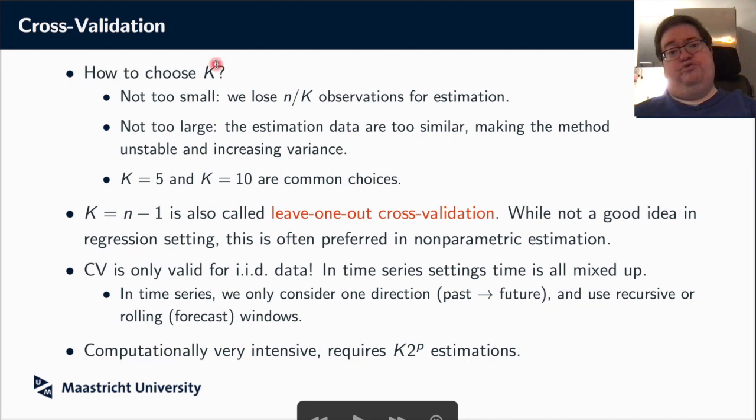Of course, it brings the question, how do we actually choose k in practice? Well, you don't want to choose k either too small or too large. If you choose it too small, you will lose too many data for estimation. But if you choose it too large, then actually your estimation will be very similar across all these folds, and you only have too few data to evaluate on. Now, common choices are k is 5 and k is 10, which is mostly just by convention. There's one other form that's interesting, k equal to n minus 1, which means here you use only a single observation to evaluate on. This is called leave-one-out because you leave only one observation out. Now, this is particular in non-parametric estimation a good approach, but in regression models, 5 or 10 are more common ways to go.